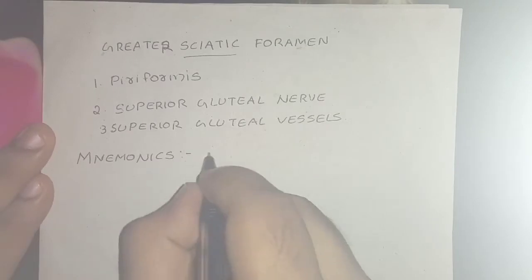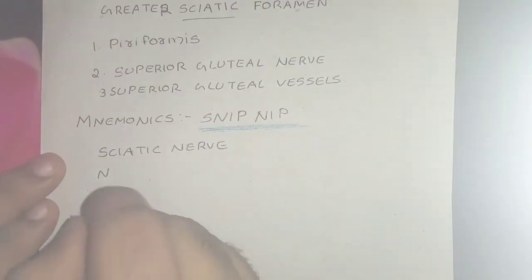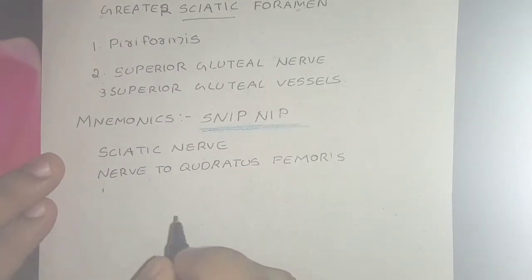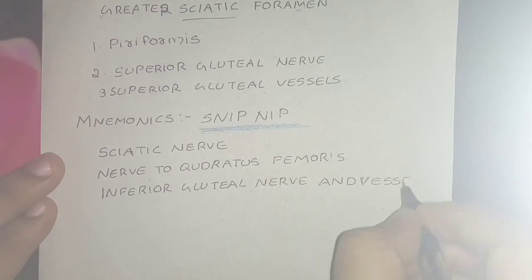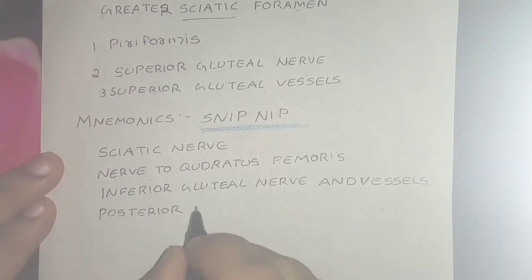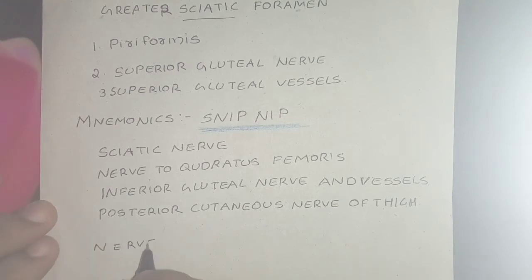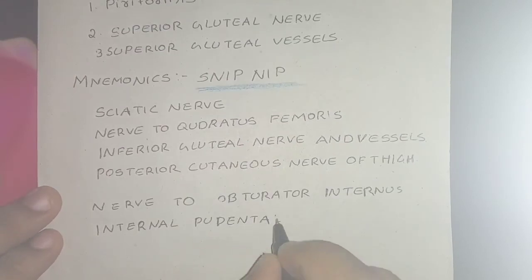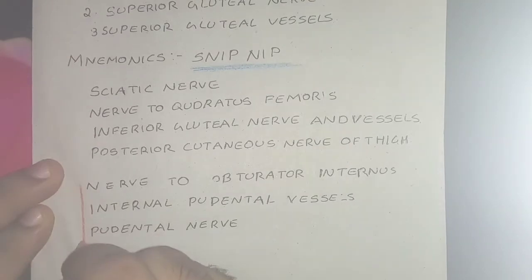Now for the structures passing below the piriformis, use the mnemonic SNIP NIP: S for the sciatic nerve, N for the nerve to quadratus femoris, I for the inferior gluteal nerve and vessels, P for the posterior cutaneous nerve of the thigh, N for the nerve to obturator internus, I for the internal pudendal vessels, and P for the pudendal nerve.